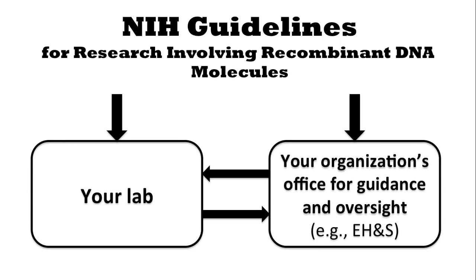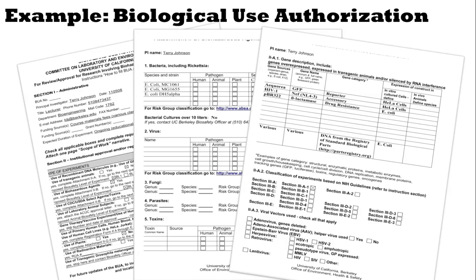An example of this would be a biological use authorization. This is paperwork that we fill out here at Berkeley and give to EH&S to make them aware of the types of experiments that are going on in the lab, so that they can best advise us to work safely and responsibly.